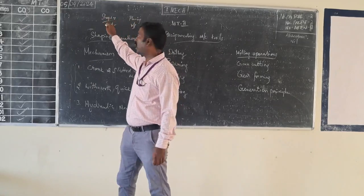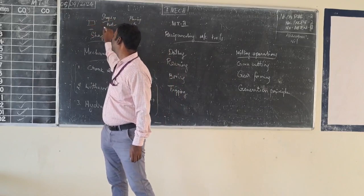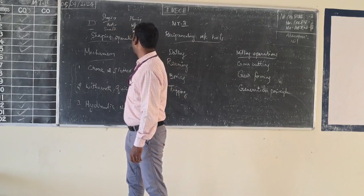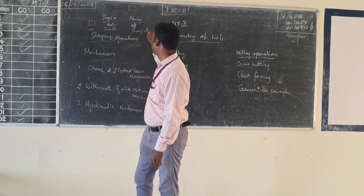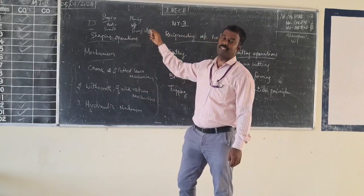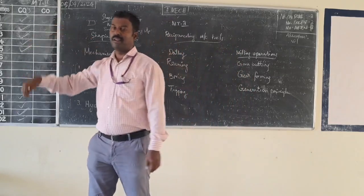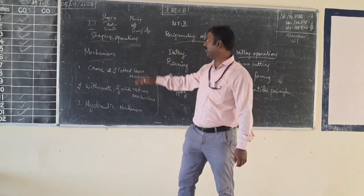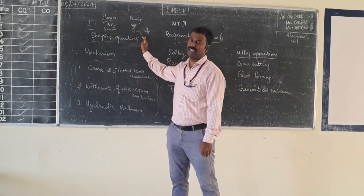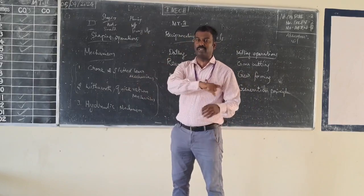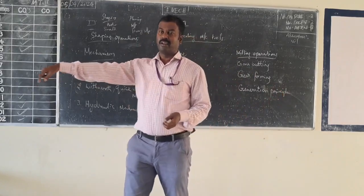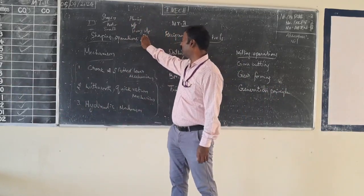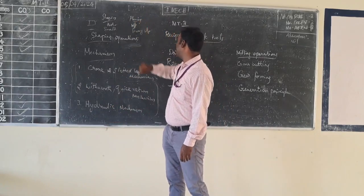In the shaping machine, somewhat small types of jobs can be machined. In the planing machine, heavy workpieces can be machined - heavier and larger. Suppose a big machine-wise table - a large length bed - you can machine by using the planning machine. The length of the workpiece can be 1 meter or more. That is done by using the planning machine.